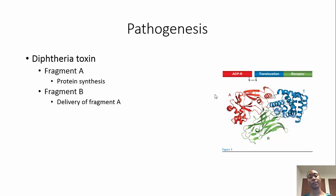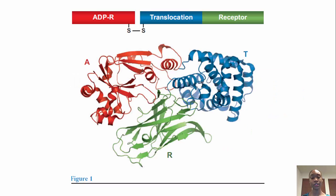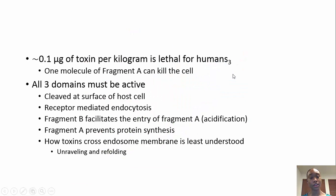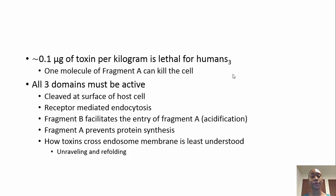As for the pathogenesis, the diphtheria toxin is an AB toxin, which means it has two components. Fragment A inhibits protein synthesis in the host cell, and fragment B helps fragment A get into the cytosol of the cell. When the toxin reaches the host cell, it is cleaved at the surface and enters the cell by receptor-mediated endocytosis. Inside the endosome, fragment B helps fragment A get through into the cytoplasm, where fragment A then inhibits protein synthesis.